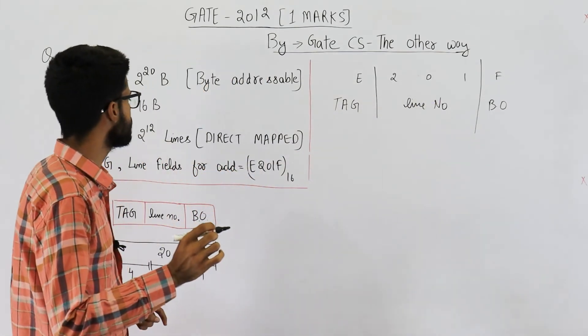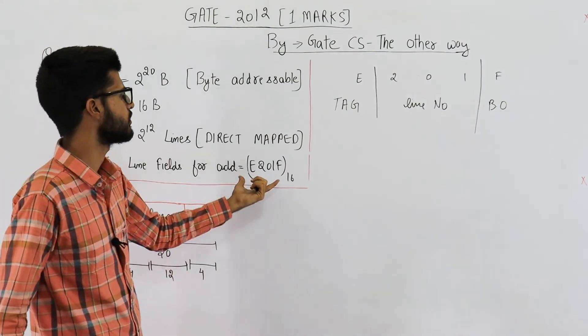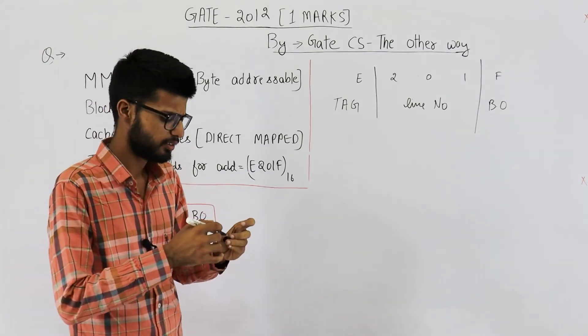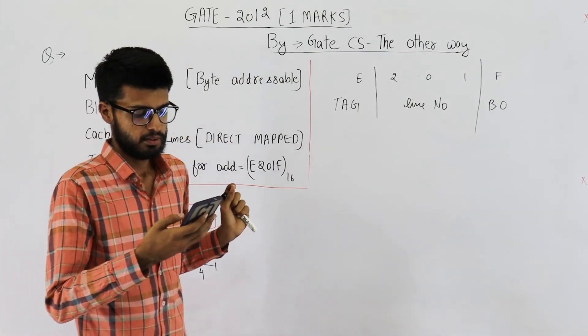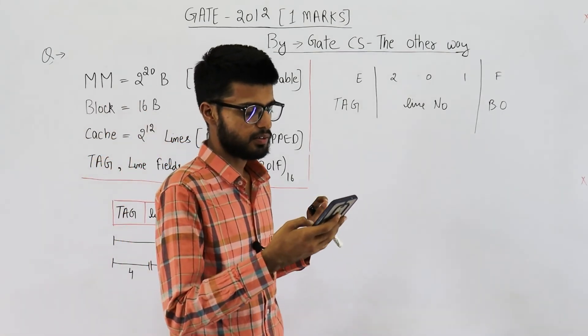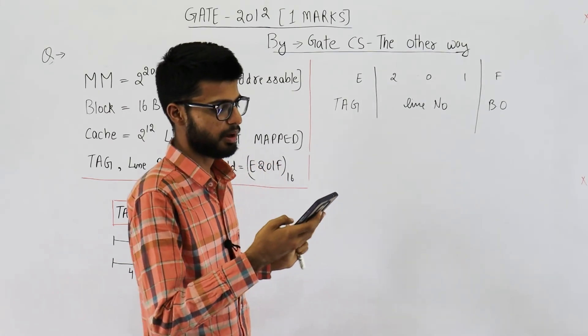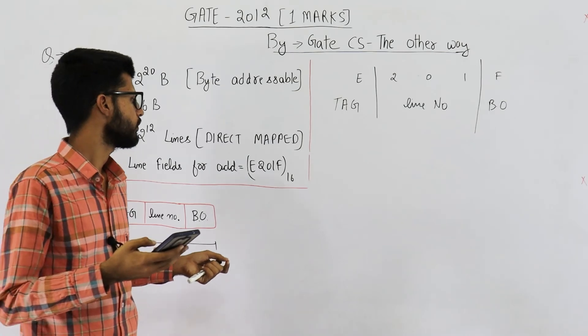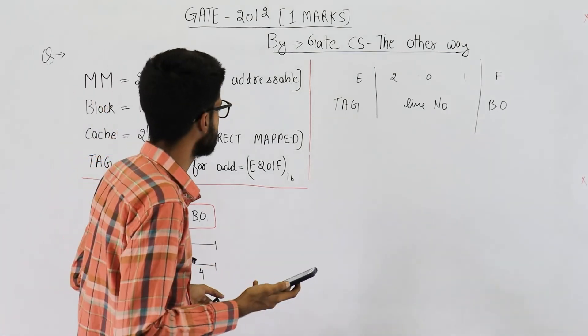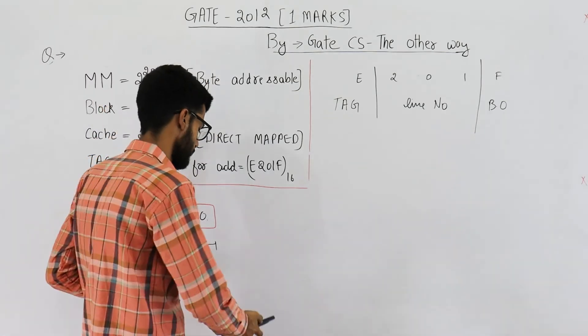Also in question they have mentioned two addresses. Maybe the line is two consecutive bytes something. Let addresses of two consecutive bytes in main memory be E201F and E2020. So I don't think it's of much significance in this question.